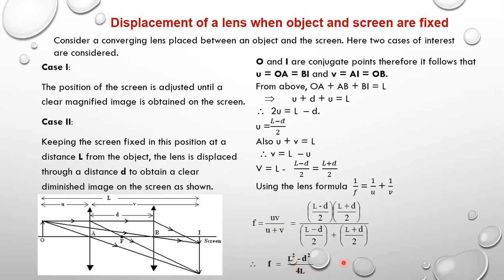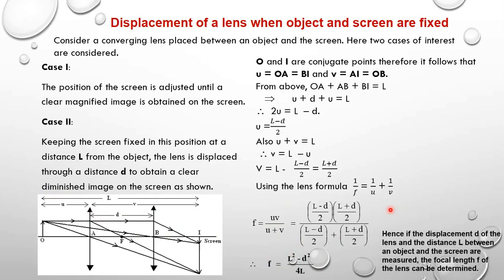So the focal length of the lens is given by F equals (L² minus D²) over 4L. If I measure the distance L from the object to the screen and the displacement D of the lens, then I can determine the focal length of the lens.